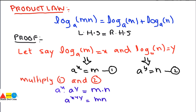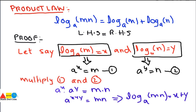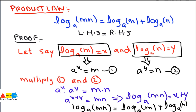Converting this exponential form into log form: since the base is a, the argument is mn, and the exponent is x + y, we get log base a of (mn) = x + y. Substituting back x = log_a(m) and y = log_a(n), we get log_a(mn) = log_a(m) + log_a(n). This completes the proof of the product law.